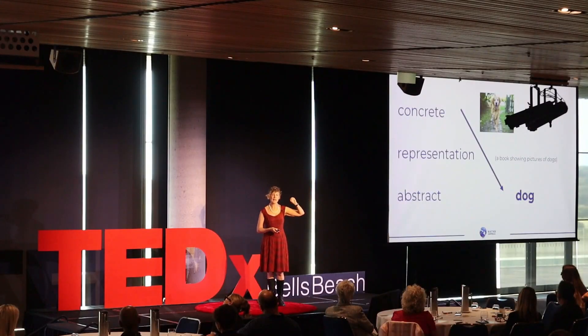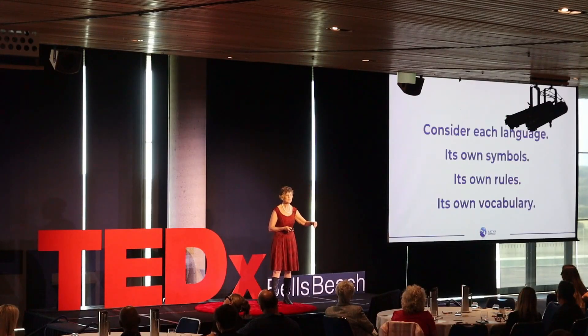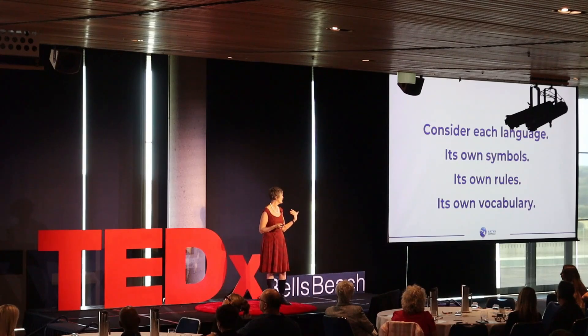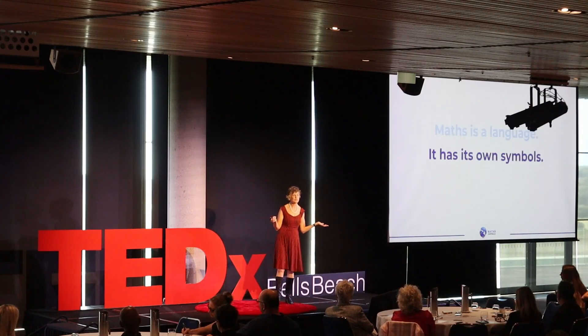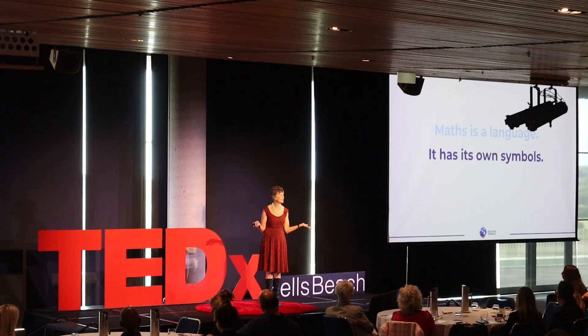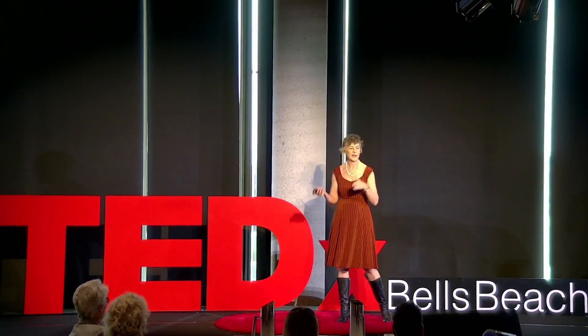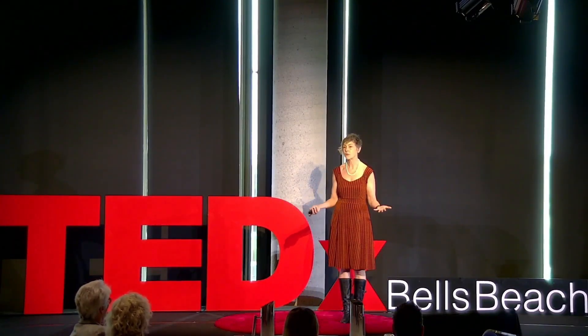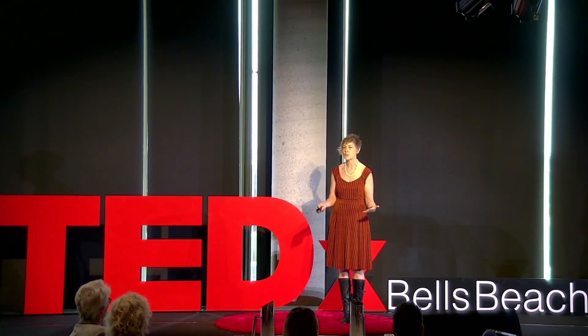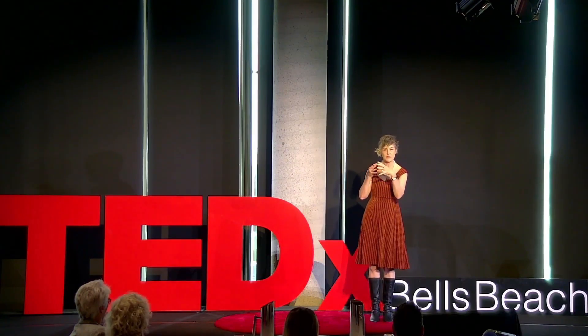When you think of a language, consider that each language has its own symbols — its own little alphabet — its own rules and its own vocabulary. So maths is a language. It has its own symbols, and our symbols of maths, similarly you could look at them as the alphabet of maths: our zero, our one, our two, our three, and so on. Like the alphabet, they're random squiggles that we've chosen to mean 'this is one of something.'